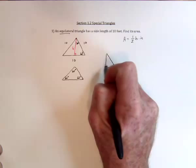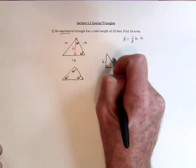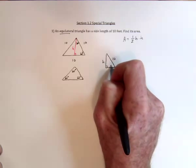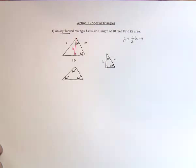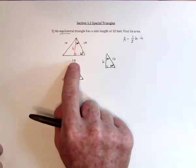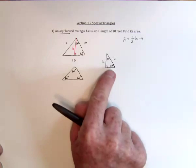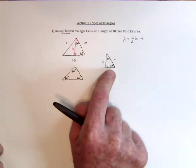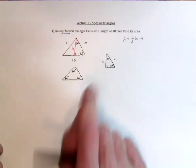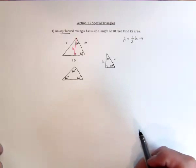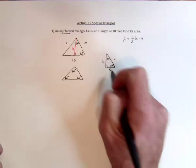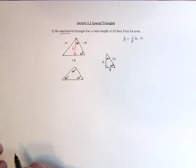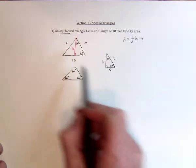And we need to find H if this side's a 10. And I actually could do this a couple of ways. One is I could say the bottom 10 got cut in half. So this is a 5. And then use the Pythagorean theorem. Or I could use the 30-60-90 theorem, which is another way to do it. But I think I'm going to use the Pythagorean theorem. So the bottom got cut in half. This is now a 5.